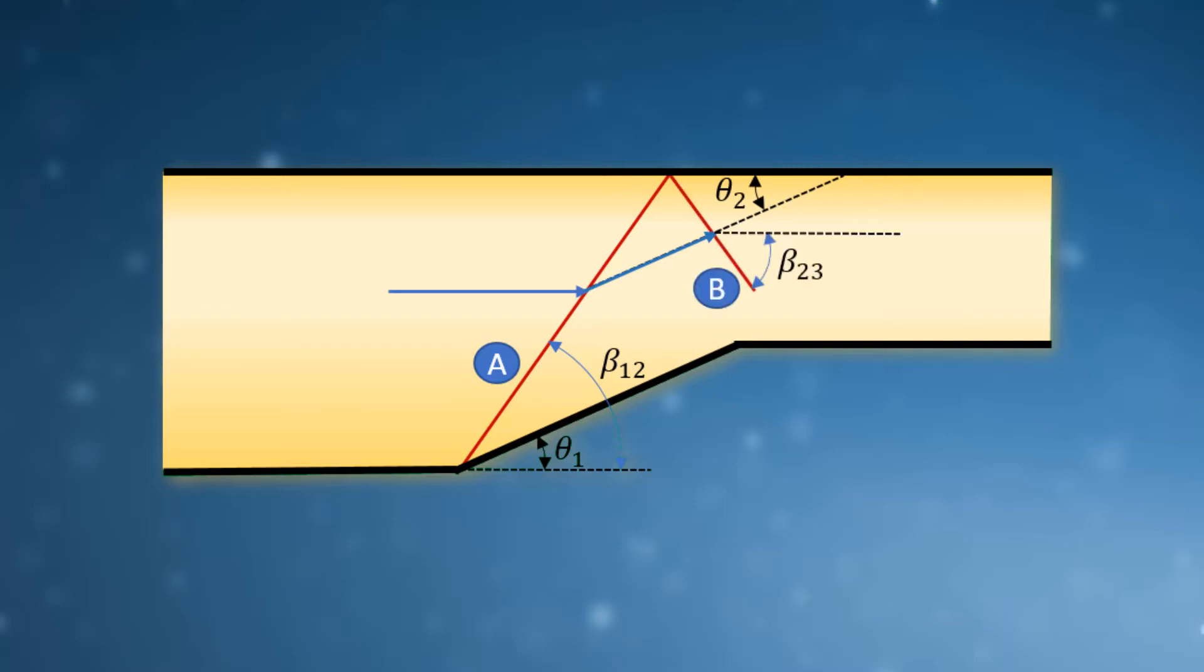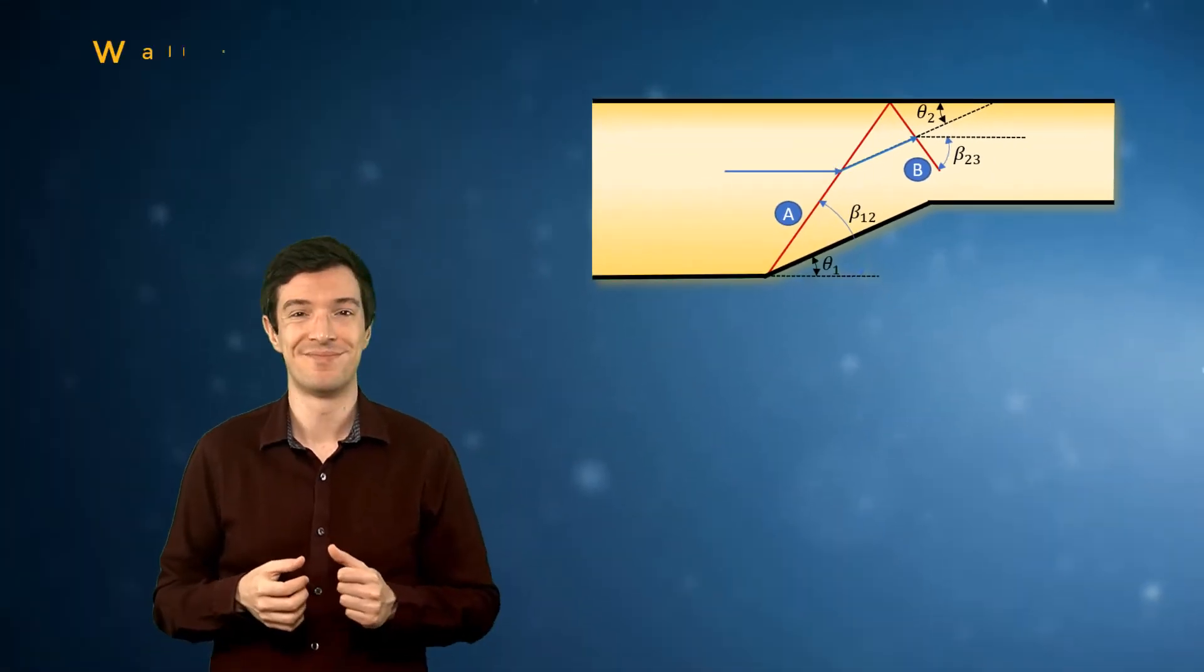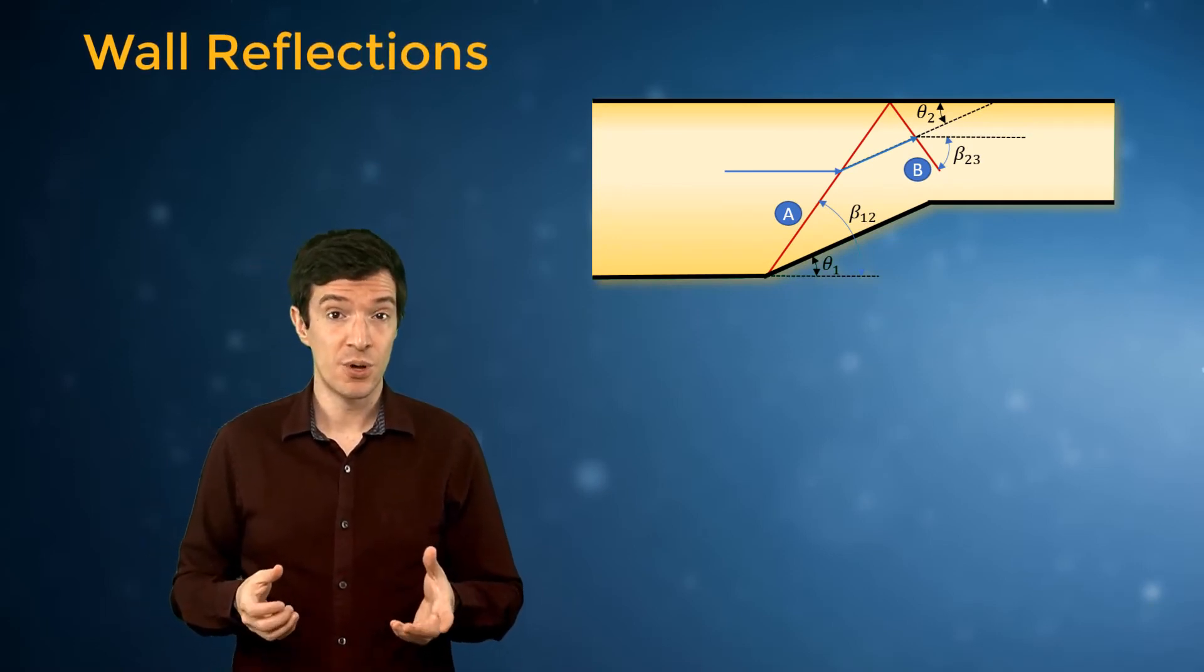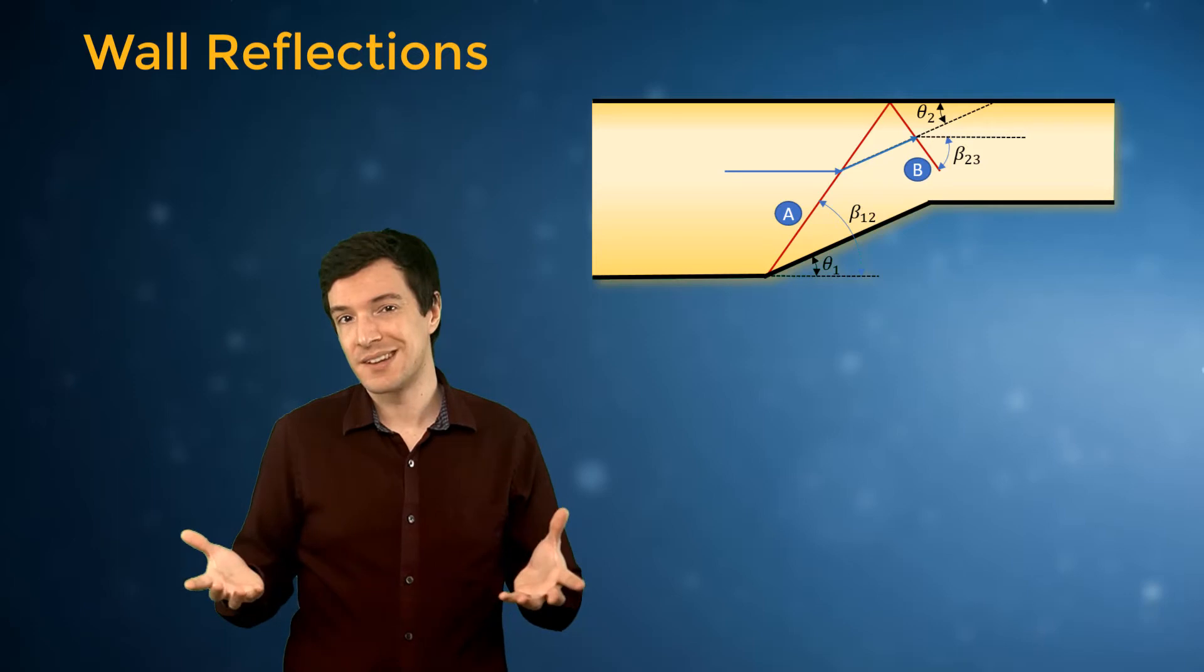Past the shock, the flow is parallel to the upper wall. The reflection angles theta 1 and 2 are equal by geometrical considerations.